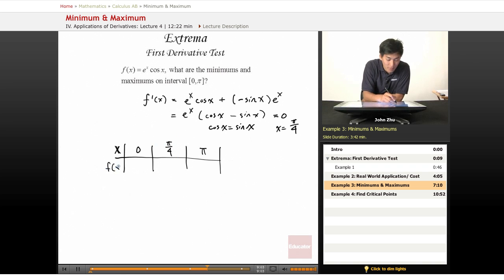So let's test the values at 0, pi over 4, and pi to see what the max and mins are. So at 0, the original expression becomes basically e to the 0 cosine of 0, this is 1.